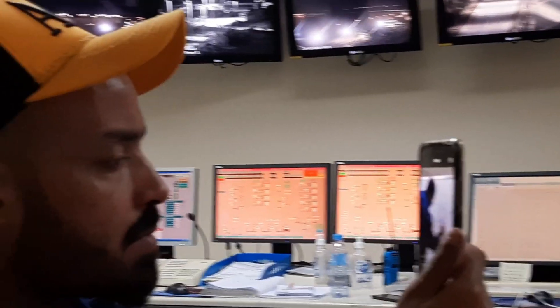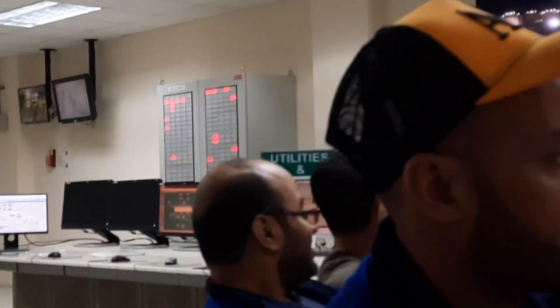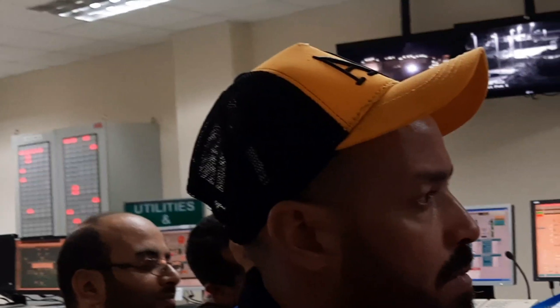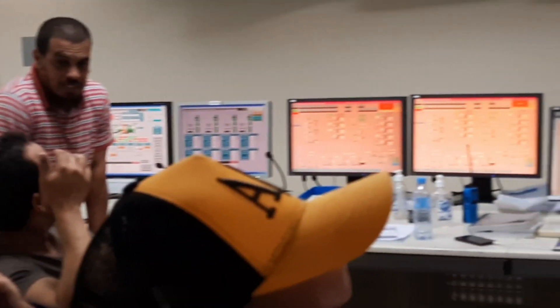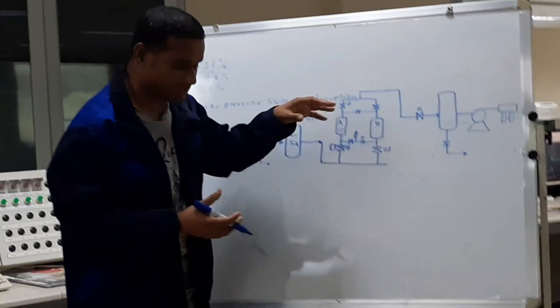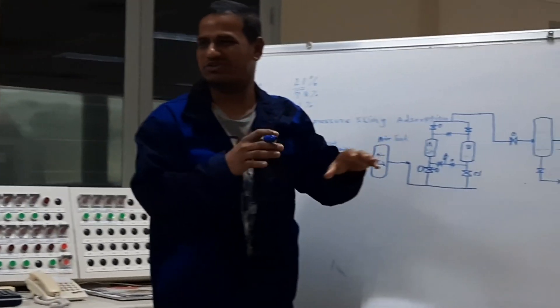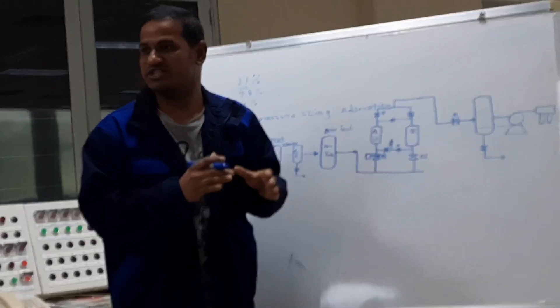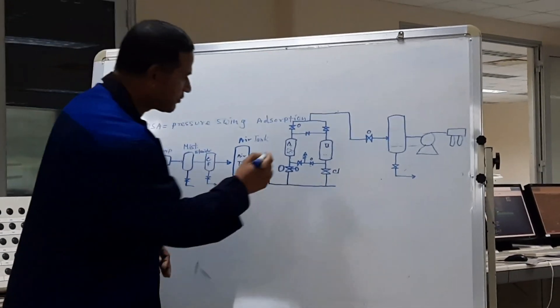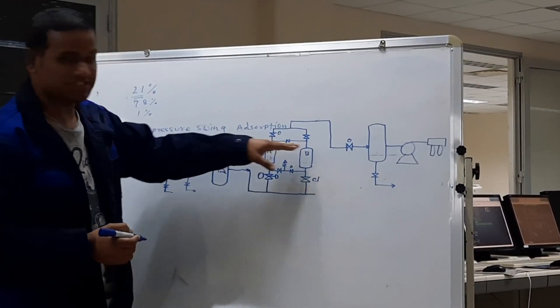The nitrogen from the regenerating vessel goes to the atmosphere. When the vessel pressure comes down, there is an equalization valve on each side. This equalization valve opens briefly to maintain pressure between the vessels, because if you suddenly pressurize an empty vessel, there can be vibration and abnormal sounds. Equalization is required. This equalization valve opens for a short time for equalizing the vessel pressure.